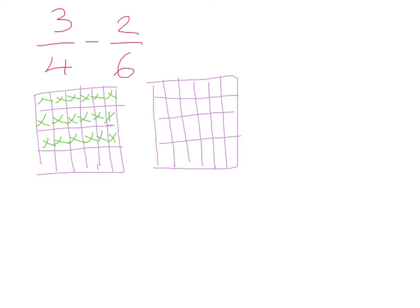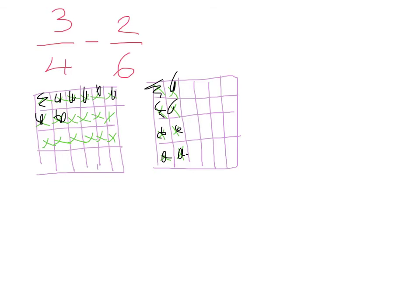My second fraction says 2 sixths of this building is occupied, so I X those out — that's 1 sixth and 2 sixths. Now I take the occupied rooms from the second building and subtract them from the first building. Scratching them out in groups: that's the first batch and the second batch, giving us 1, 2, 3, 4 crossed out each time. That leaves me counting the remaining occupants: 1, 2, 3, 4, 5, 6, 7, 8, 9, 10.